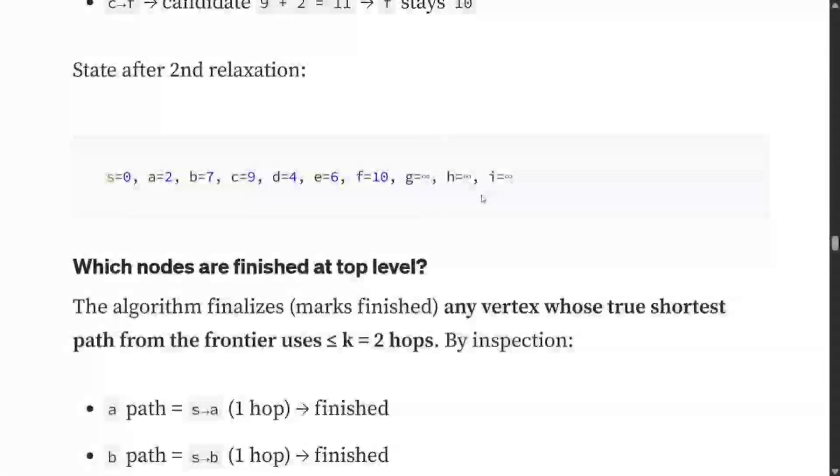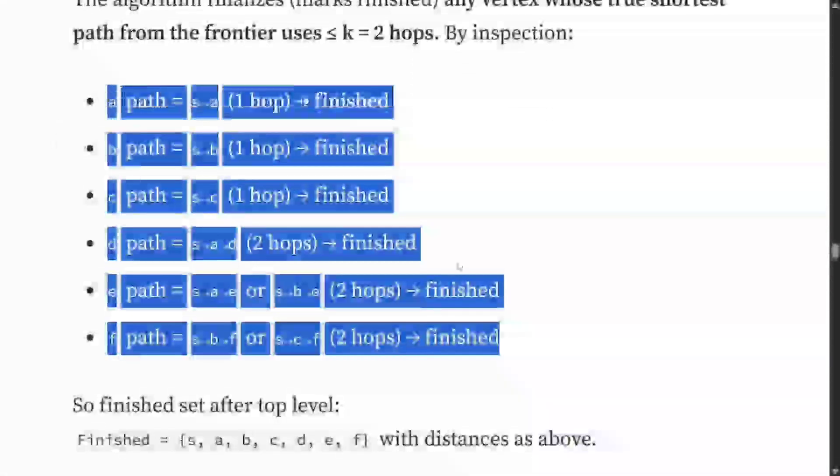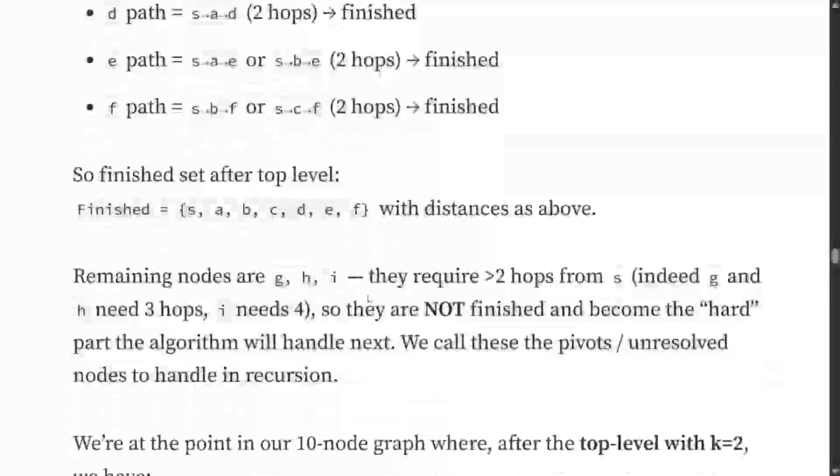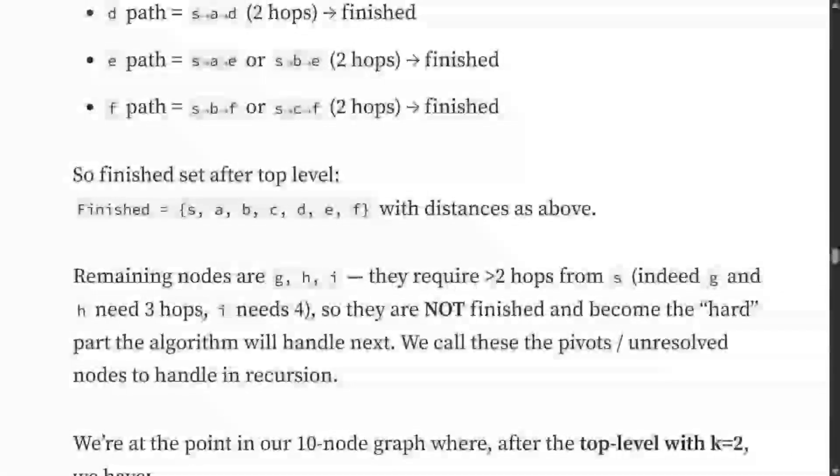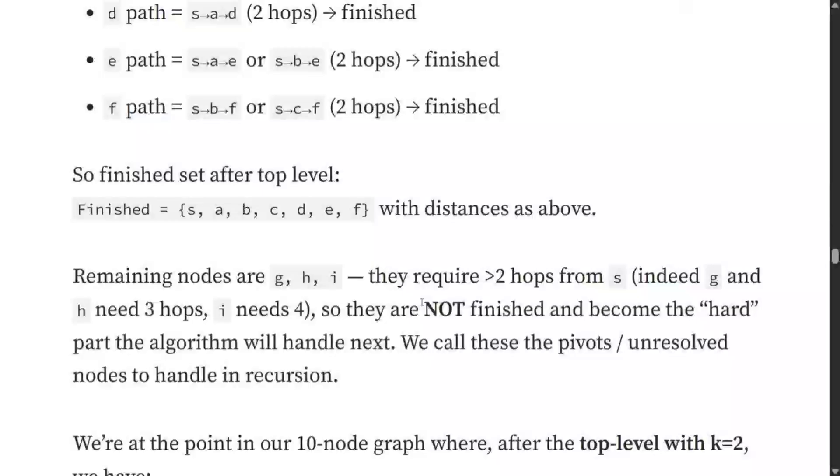With two hop counts, you can't reach G, H, I. You need more edges. Now which nodes are finished? This was the first round and we got the shortest path for all six nodes. This is how fast this algorithm is. With just one iteration, you're able to get shortest path for six nodes, while in Dijkstra this would have taken multiple iterations. G, H, I are left because they require more than two hops. G and H require three hops, I requires four hops.